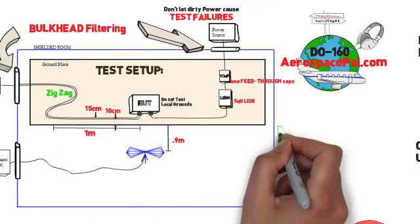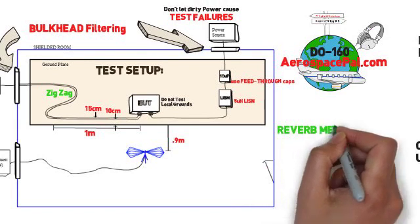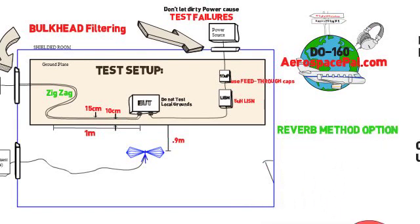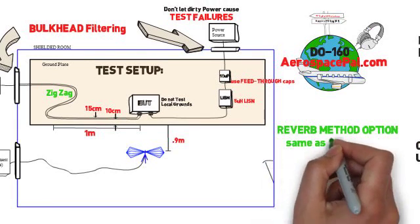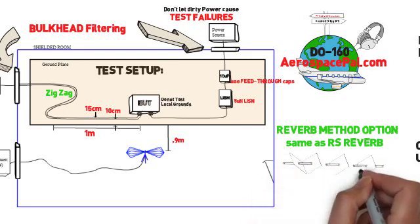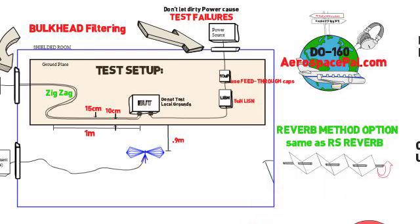I do want to state that section 21 for radiated emissions also has an alternate method called the reverb method. Although I have not personally tested RE using the reverb method, the idea is the same as radiated susceptibility. A stirring pedal continuously rotates to ensure the EUT polarity and or cable routing does not affect the measurement.